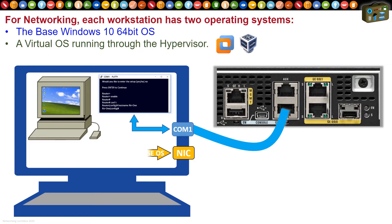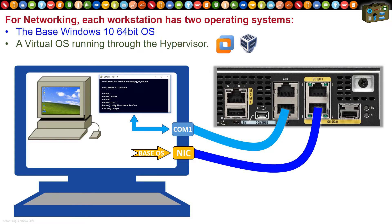We've also cabled in the Ethernet connection into the network card of our PC, so now we've got network connectivity to the device we're trying to program. But there's a problem — the base operating system, the base Windows, is locked down. It won't let you change the IP address: IPv4, IPv6 — you can't make any of these changes.